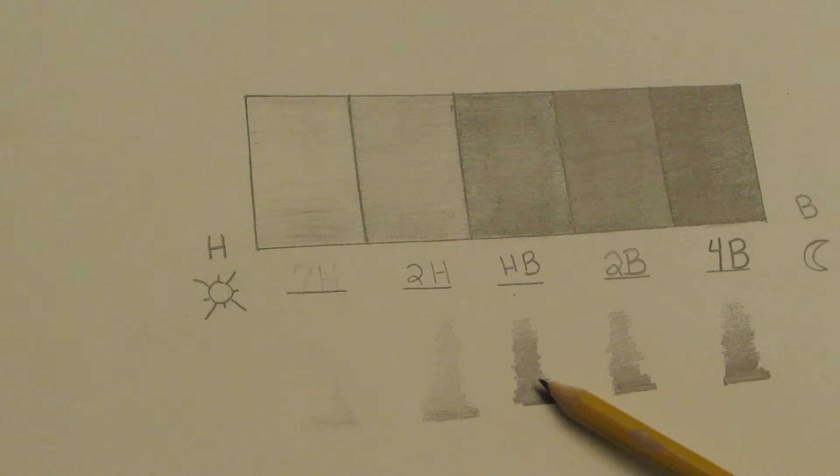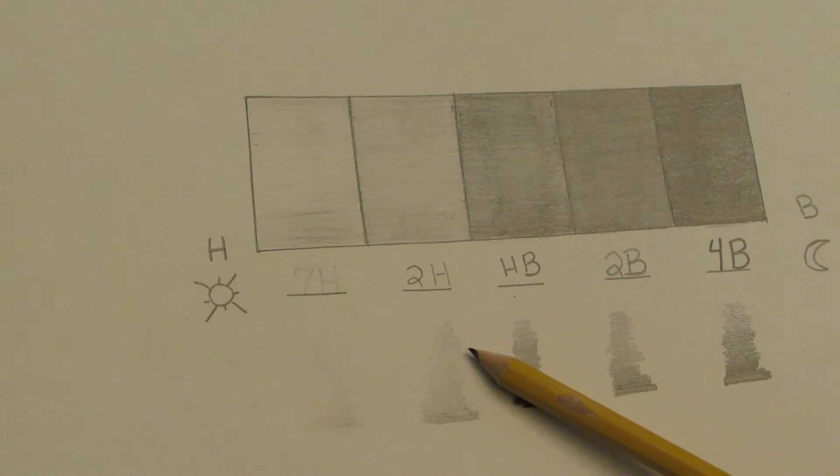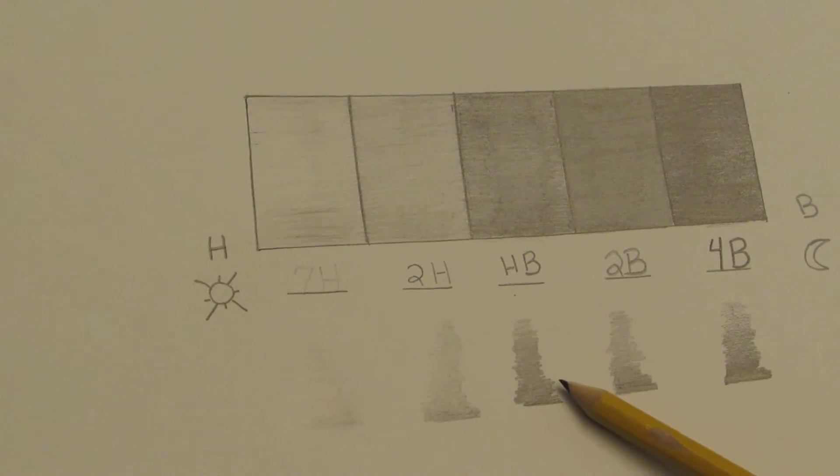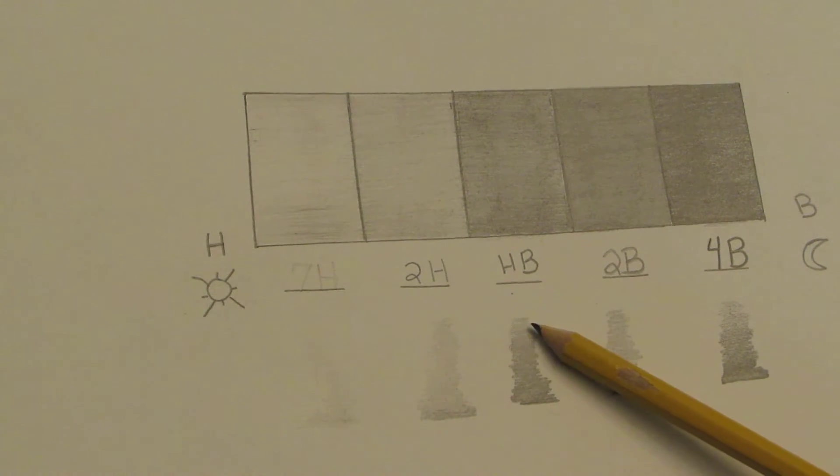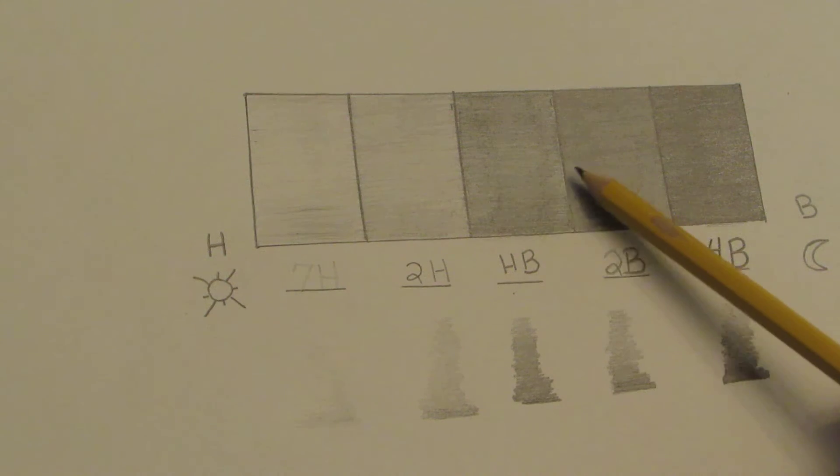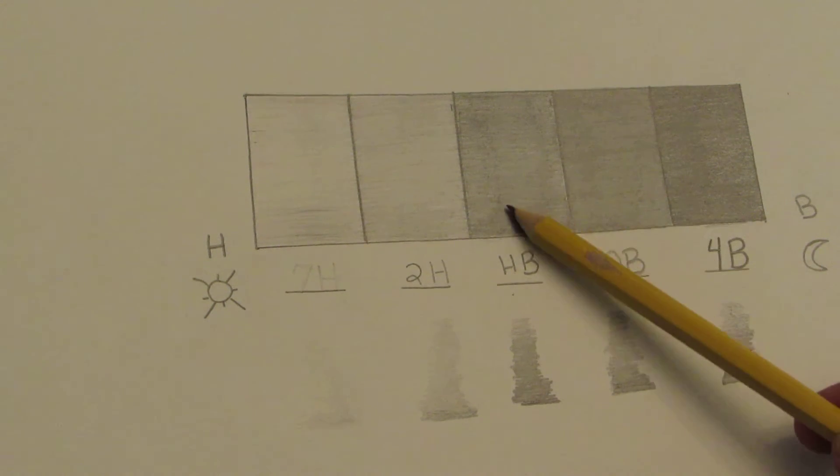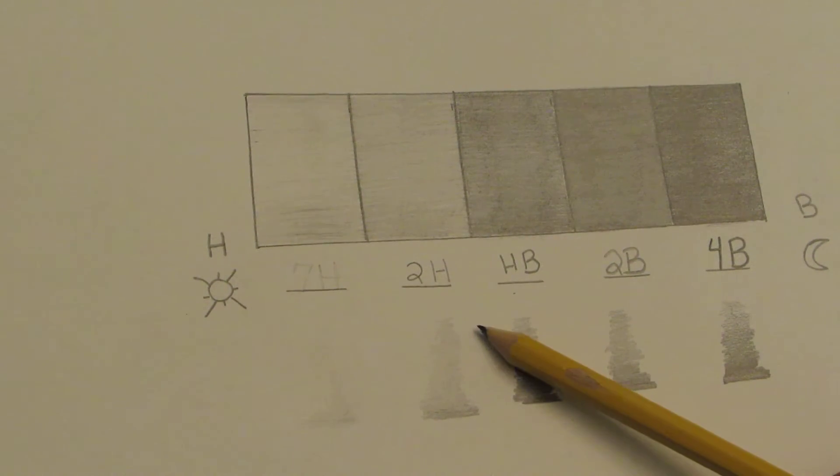Also what I'd like you to do is down here underneath, I'd like you to shade some maybe some upside-down tornadoes here. They don't have to be super neat, but what I'd like you to do is to test out range. So up here you're just doing the same color all the way across for each one of your pencils.